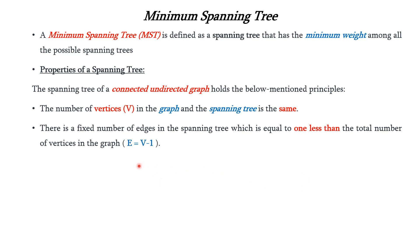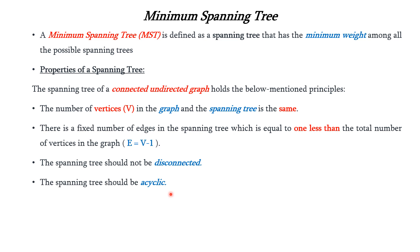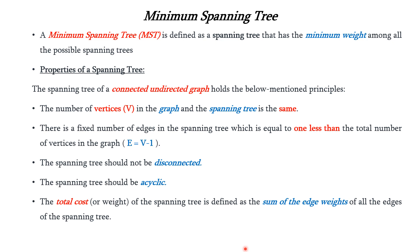Here E is the number of edges in the spanning tree, which should be equal to 1 less than the number of vertices available in the graph. The spanning tree should not be disconnected — there should be connectivity between the nodes. The spanning tree should not contain any cycles. The total cost of the spanning tree is defined as the sum of the edge weights of all the edges in the spanning tree. Finally, there can be many possible spanning trees for a given graph.